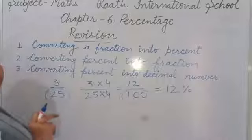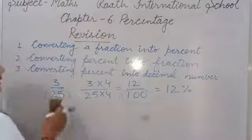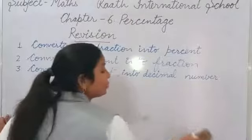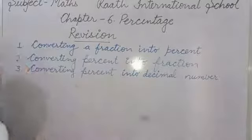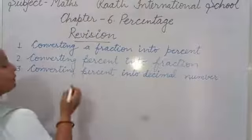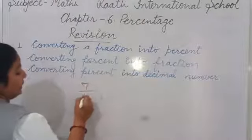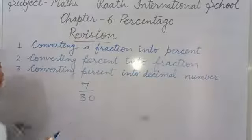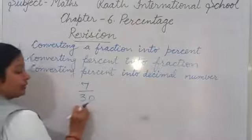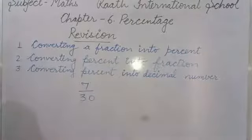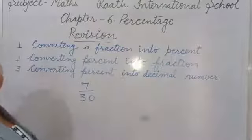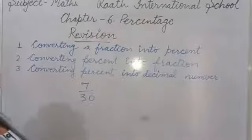This is the first method. Now the second method: when we can't convert our denominator to 100. For example, if we have 7 upon 30, in the 30 times table we don't have 100, so 30 cannot be converted to make a denominator of 100. So now we apply the second method.